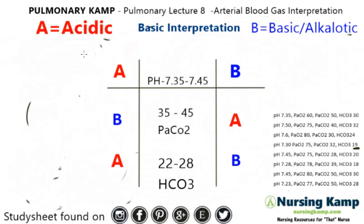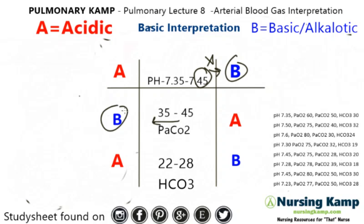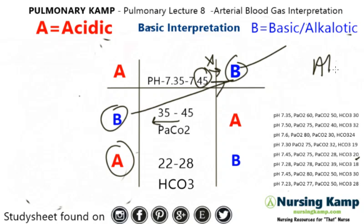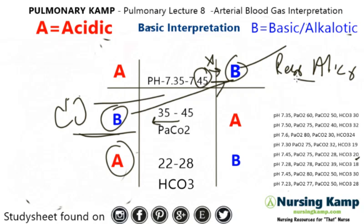Next one — pH is 7.5045. It's closer to the basic side, so we circle basic. The PCO2 is 28, so that's over to the basic side. The bicarb is 20. We match the two together — we have alkalosis, and the PCO2 is respiratory again. So this will be respiratory alkalosis.